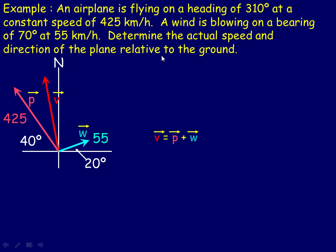Now, in this example — if you've seen one of the previous lessons, I solved the same example using cosine law and sine law. Here we're going to do it just using components. An airplane is flying on a heading of 310 degrees at a constant speed of 425 kilometers per hour. A bearing of 310 means straight north is zero, then around to 90, then 180, then 270, and another 40 gives you the bearing of 310. That plane vector P is 425 km/h in that direction. What we need is the angle it makes with the horizontal in order to calculate components.